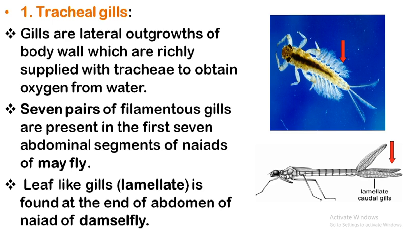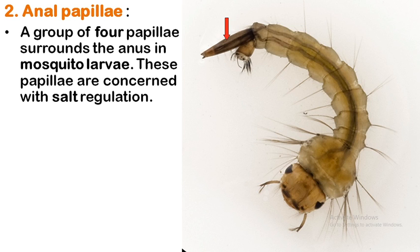Lamellate gills, also called caudal gills or lamellate caudal gills, are found in the naiads of damselfly. Then there are anal papillae. In the larva of mosquito — called wrigglers — a group of four papillae are present on the abdominal segments surrounding the anus. These papillae are concerned with the regulation of salt inside the body of the mosquito larva.